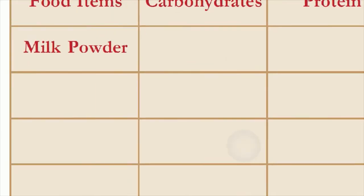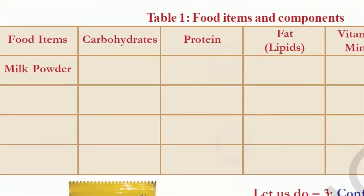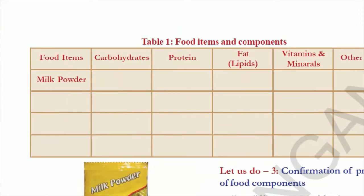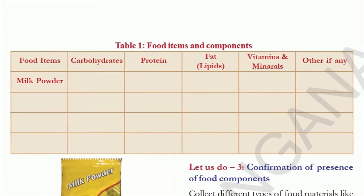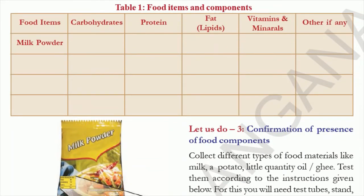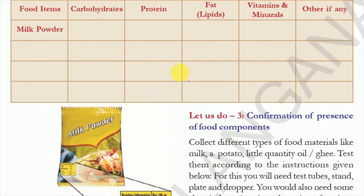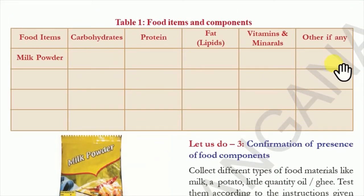First make a large table on an A4 size paper, then take the food material packets and fill in the columns. For example, in the carbohydrates column, check whether carbohydrates are present in each product. For milk powder: carbohydrates, protein, sugar, and fat are all listed. Fill in each of these for every food item in the table.